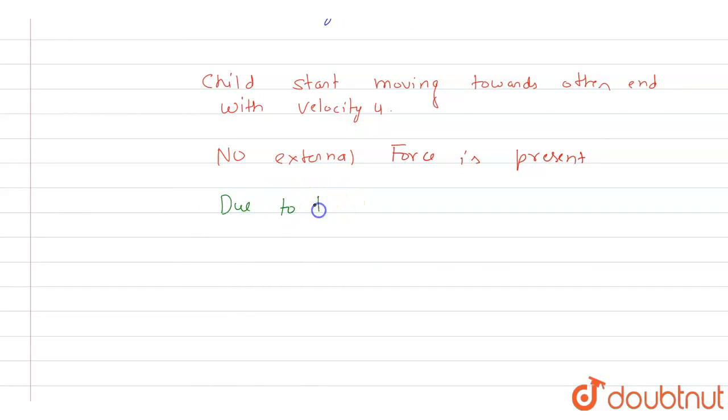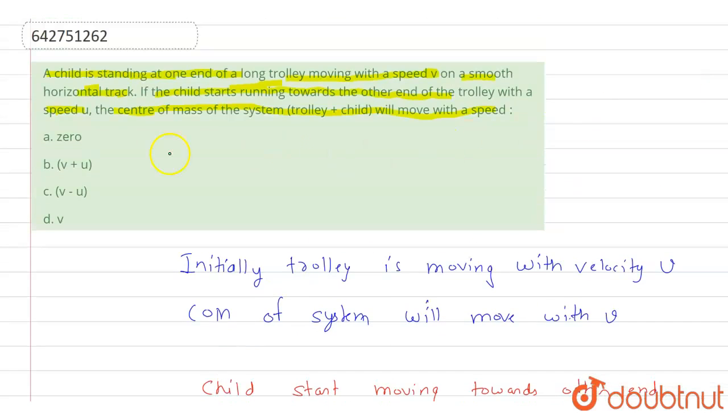The center of mass will travel with speed v. Okay, so when we look at the options, we can see that option d is the correct answer. Because there is no external force acting, even though the child is traveling with velocity u on the trolley, the net velocity of the center of mass will again be equal to v.